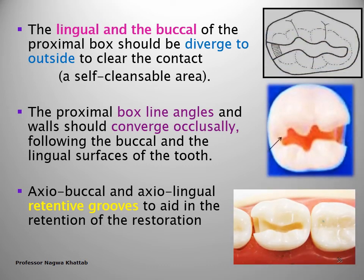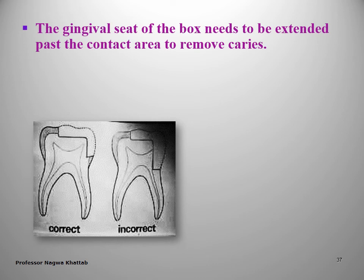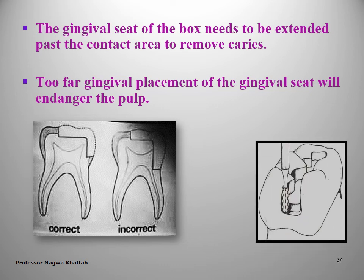For Class 2 cavity, the width of the occlusal portion is between one-fourth and one-third of the intercuspal distance, while the isthmus portion is half the intercuspal distance. The gingival seat of the proximal box should be extended just beyond the contact area. The contact area is a caries-susceptible area; therefore, the gingival seat should pass this area but should not be too deep to avoid endangering the pulp. The gingival seat is placed just beyond the free gingiva to ensure clearance of the contact area.